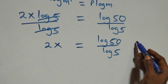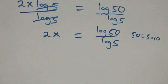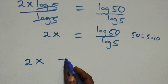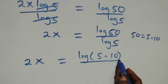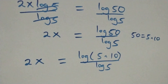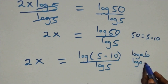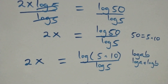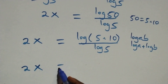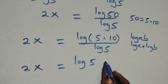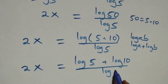Next, we can write fifty as five times ten. So what we have becomes two x equals log of five times ten, over log five. This follows the law of logarithm: log of a times b equals log a plus log b. So what we have becomes two x equals log five plus log ten, all over log five.